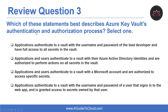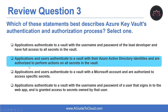Question three: which of these statements best describes Azure Key Vault's authentication and authorization process? The correct answer is: applications and users authenticate to a vault with their Azure Active Directory identities and are authorized to perform actions on all secrets in the vault. Access policies are used to provide authorization for actions that apply to every secret in the vault.